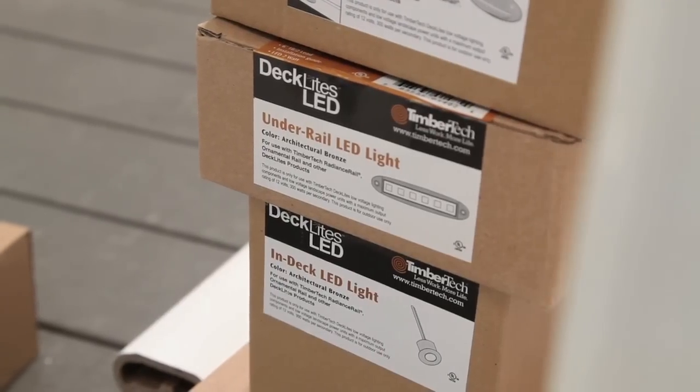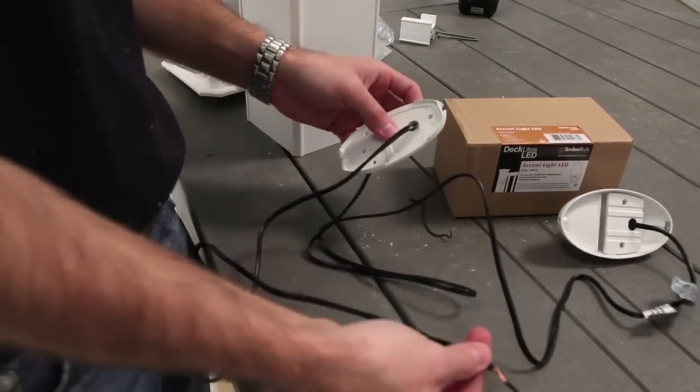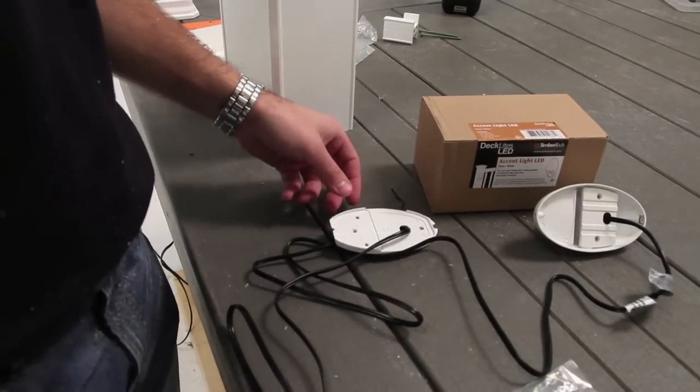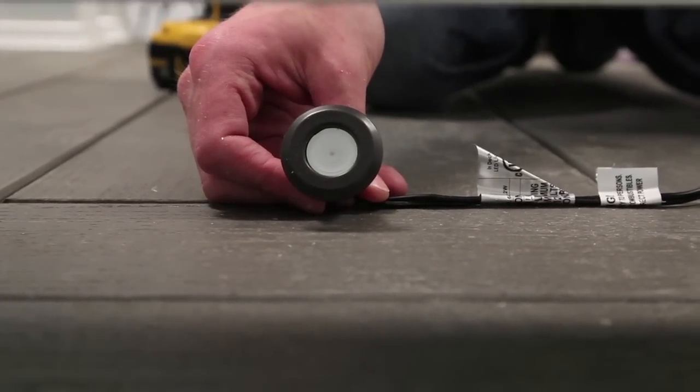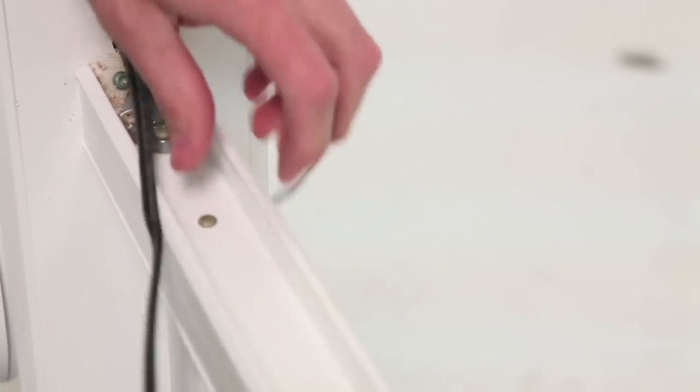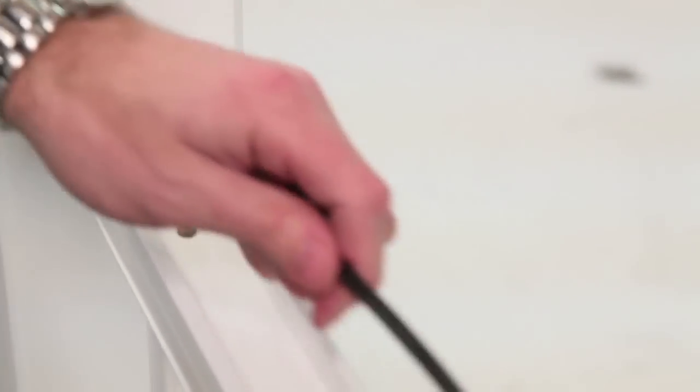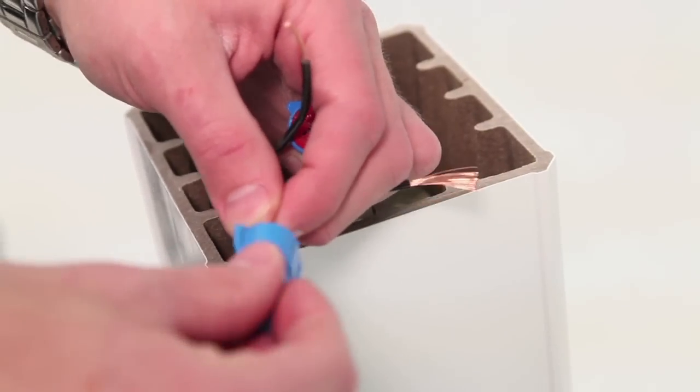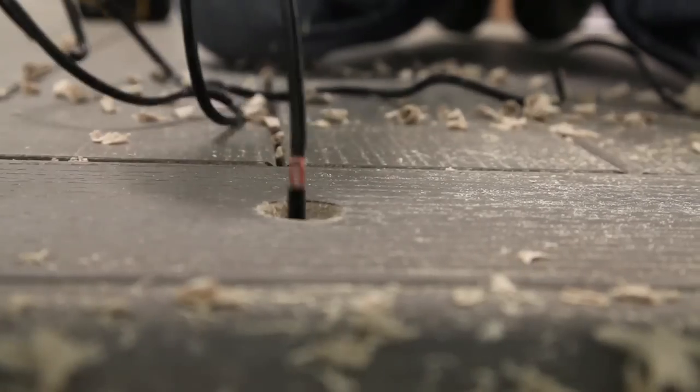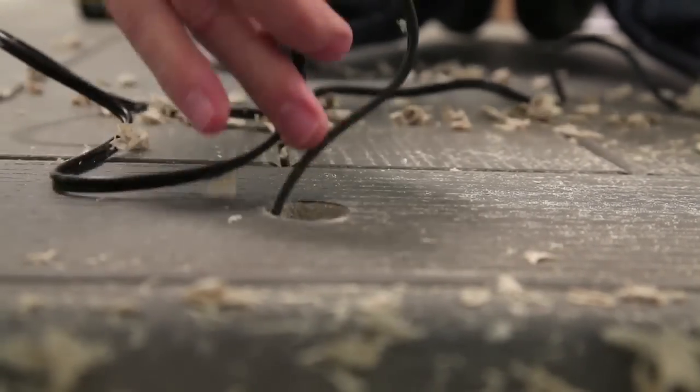The LEDs are built into the lighting fixtures and do not need to be purchased separately. When planning the layout of your lighting, refer to the installation guide to ensure that no more than 40 watts is applied to a single circuit and 90 watts is applied to a transformer.